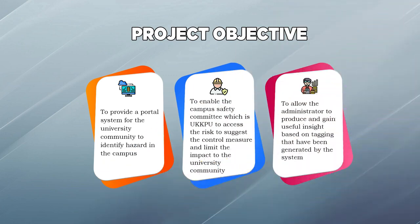For the CampusSafe project, there are three system objectives. First, to provide a reliable system for the university community to identify hazards on campus. Second, to enable the campus community and UKKPU to assess risks, suggest control measures, and limit the impact to the university community. Third, to allow the administrator to produce and gain useful insights based on the tagging generated by the system.